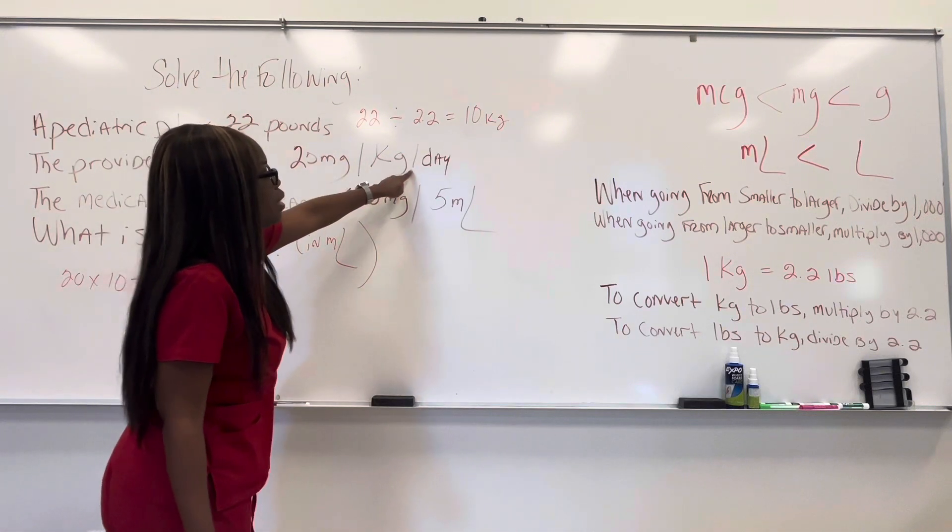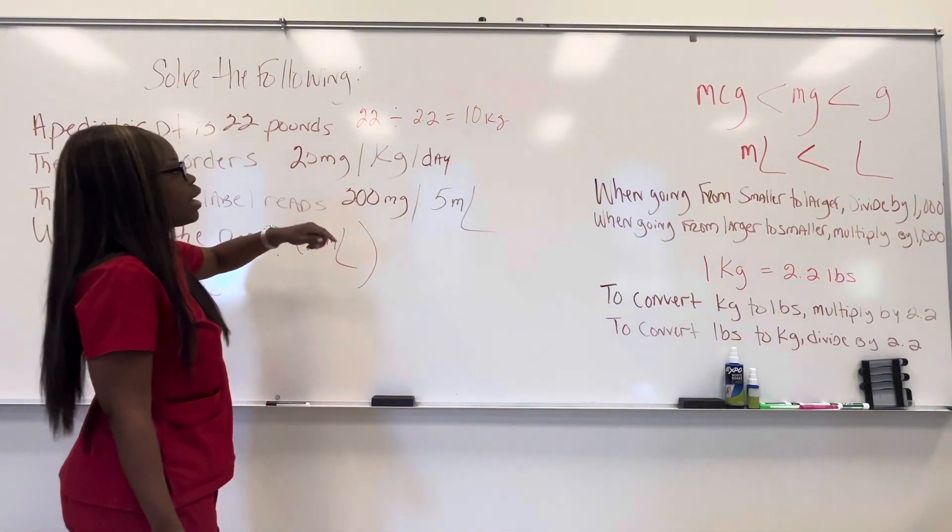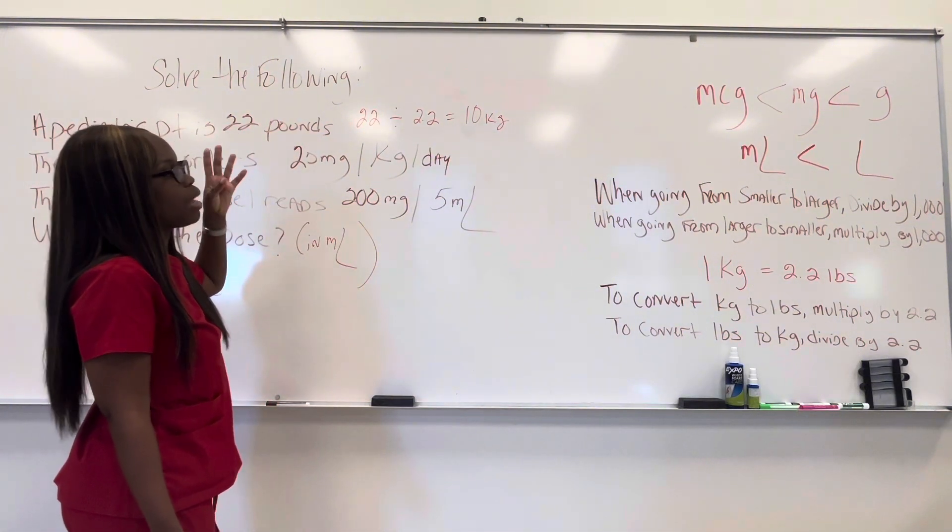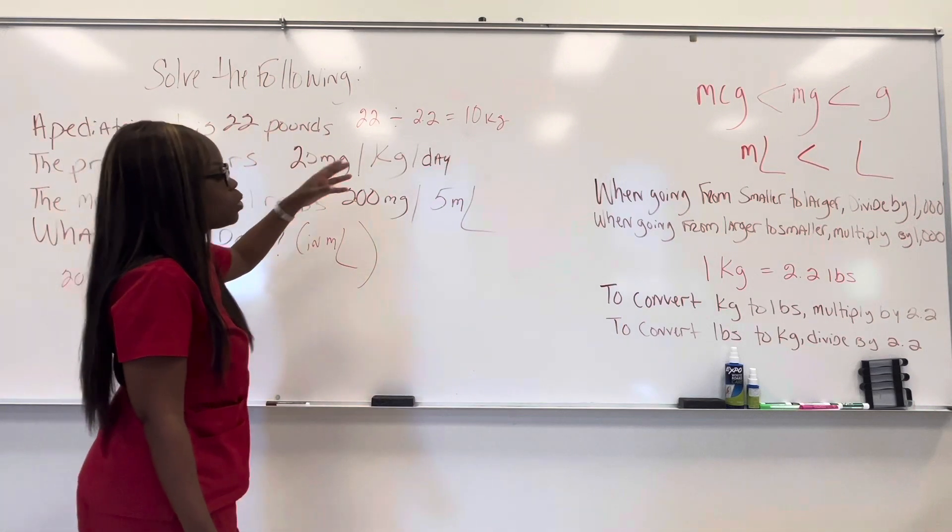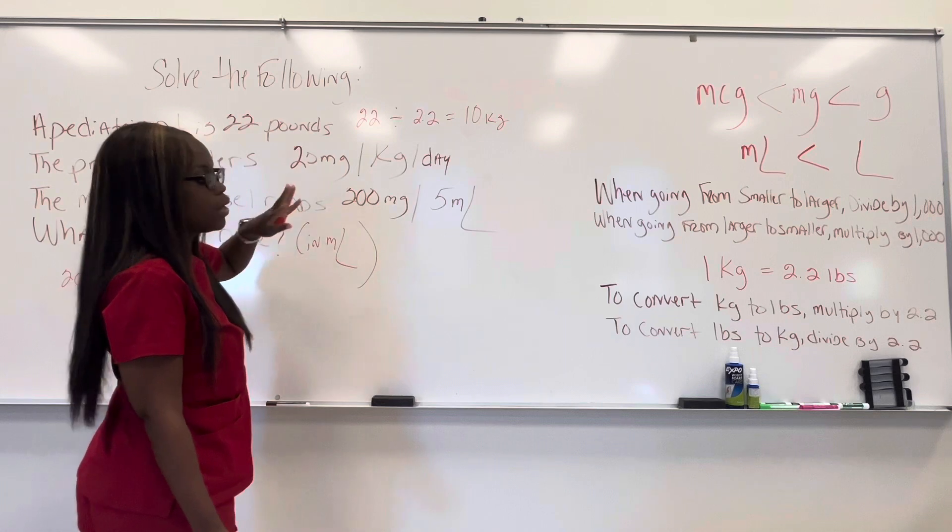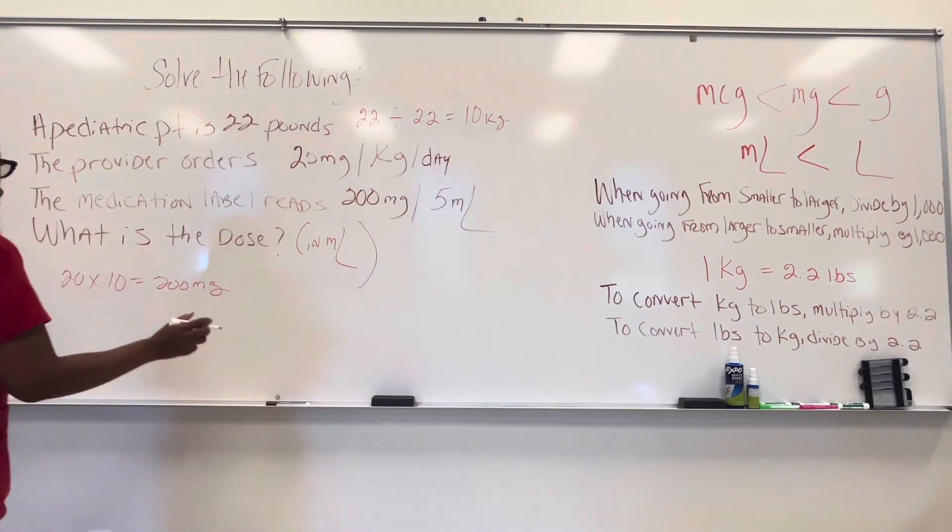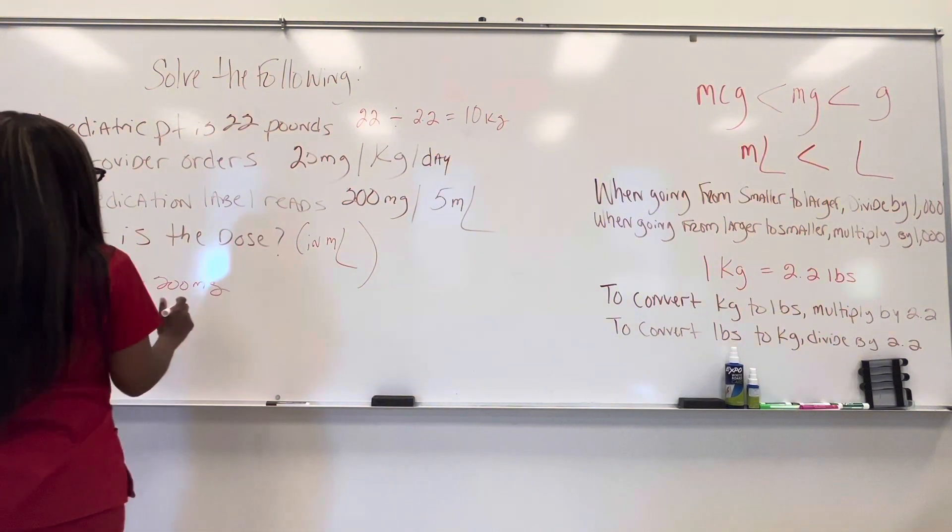Now, when the problem says per day, you can always assume that it's just once, right? Because if you need it more than once, it'll say BID, TID, right? Or QID. But anytime you see daily or per day, if it doesn't specify anything more, you know that it's just once a day. So the provider wants that patient to have 200 milligrams a day.